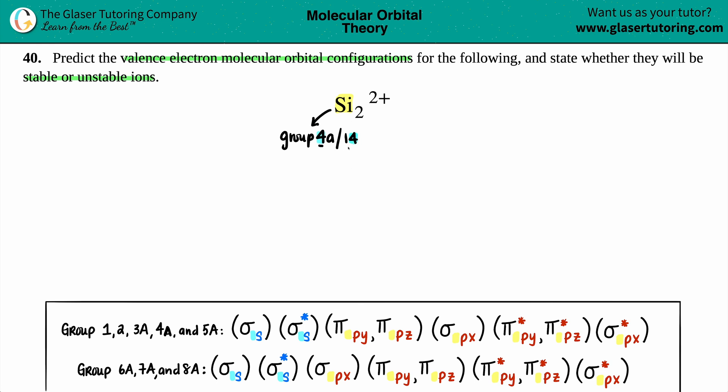In those groups you have four valence electrons, but you have two silicons. Each silicon has four valence electrons, you got two of them, so multiply by two. Two silicons times four valence electrons, two times four, I'm now dealing with a total of eight valence electrons.